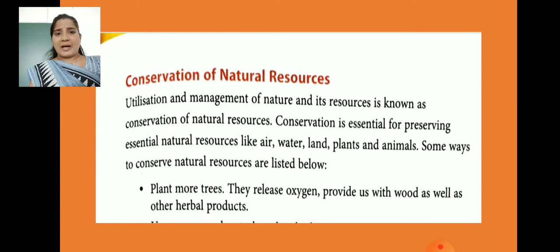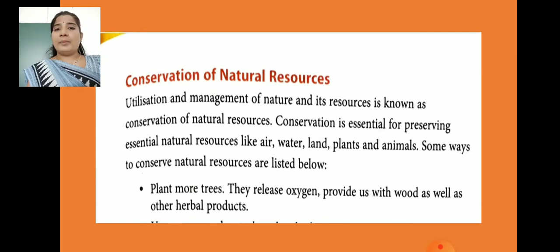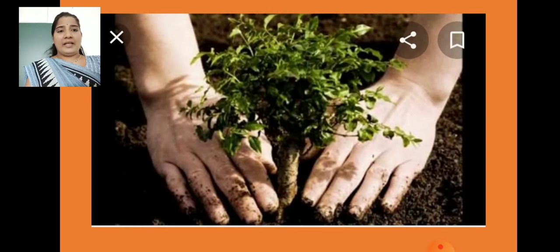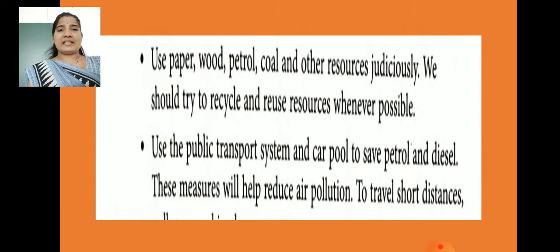So, what are the ways to conserve natural resources? The first way is to plant more trees. They release oxygen and provide us with wood as well as herbs. So, we get oxygen from trees — not only oxygen, we get wood also, and we get herbal products also. You have to plant trees.